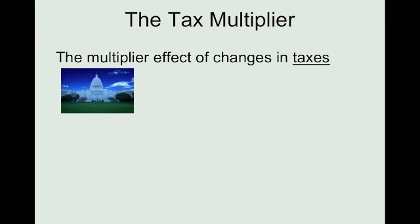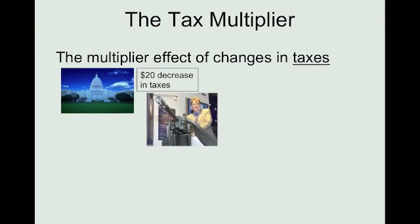Now we're going to talk about what happens when they change taxes, and it's going to work a little differently. If the government is going to start off by changing taxes instead of spending the $20, they basically are just telling this person that they're going to cut your taxes by $20. So the $20 you thought you were going to have to give to them — now that's yours, you keep it. The yellow suit dude is going to think that's basically just like earning $20, because it's $20 he doesn't have to give up. So it's a $20 increase in their disposable income.